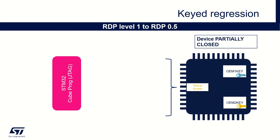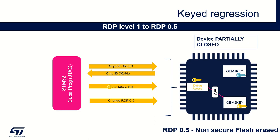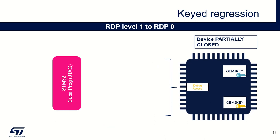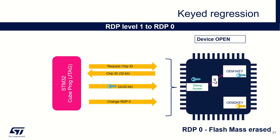For the RDP regression from level 1 to level 0.5, it's slightly different. The first step is the same, but when you send the OEM2 key value, it is only stored internally. Then you will have to request the RDP regression to level 0.5. This will trigger the comparison with the OEM2 key, and if the value matches, the regression will take place. Associated to this regression, the non-secure flash is automatically erased. Finally, for regression from level 1 to level 0: you recover the JTAG device ID, then you send the OEM1 key value, which is only stored inside the STM32. Then you request the regression to level 0. This triggers the comparison with the OEM1 key, and if the value matches, the regression will take place and the complete flash content is automatically erased.